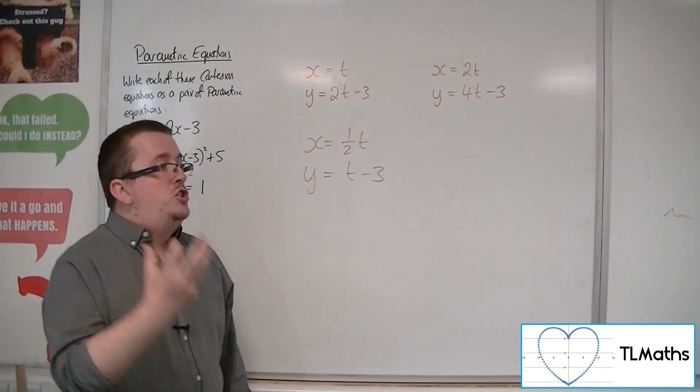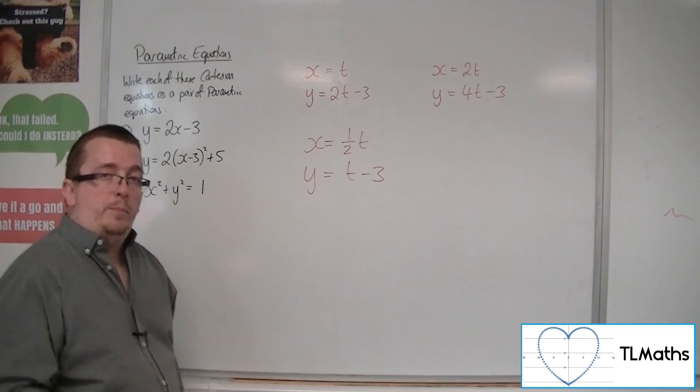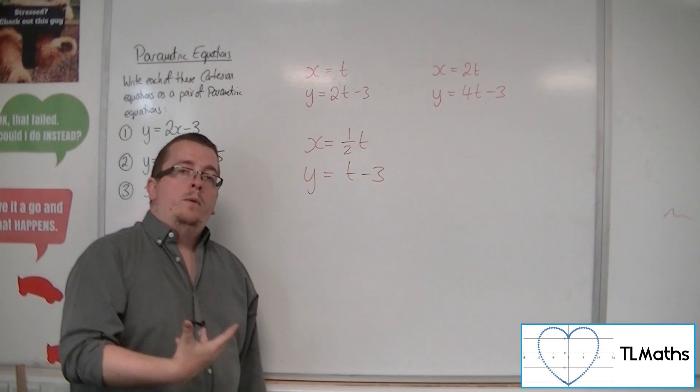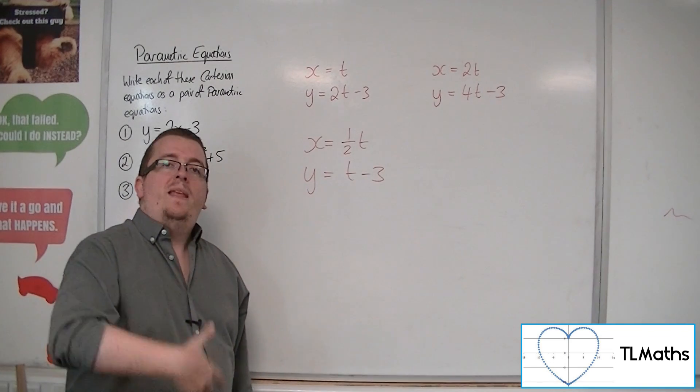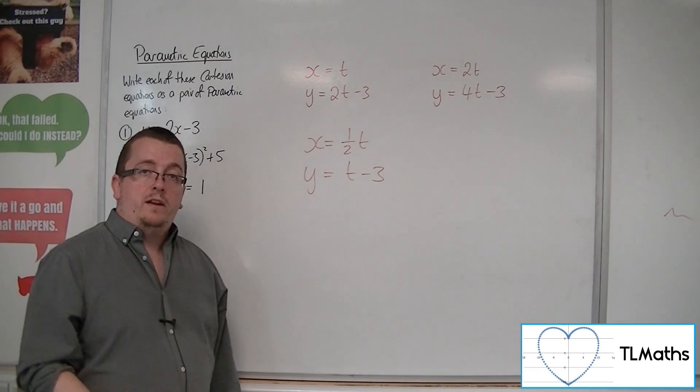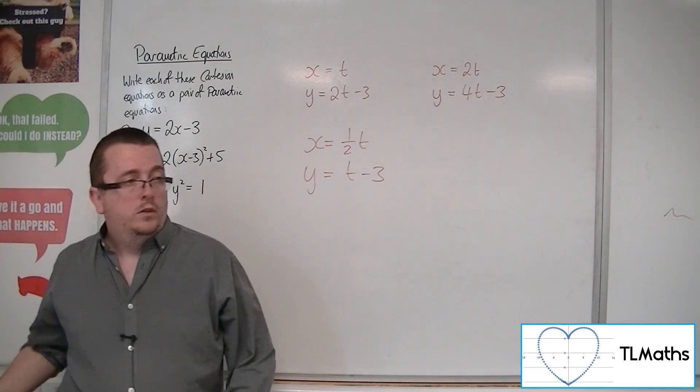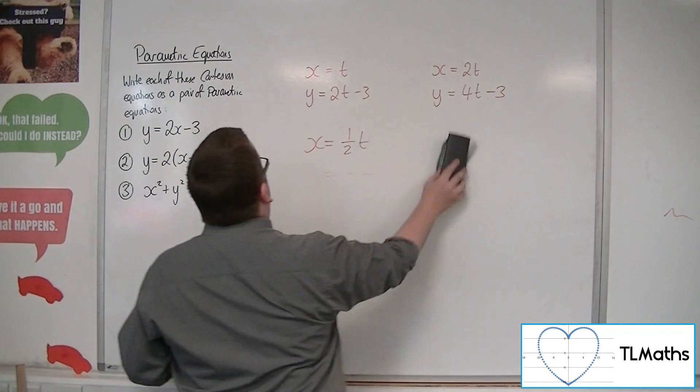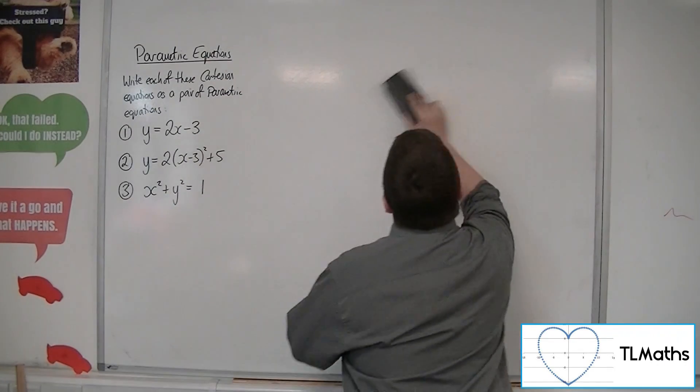So they do each have different properties in the sense of how they're governed by their parameter. However, they would trace out precisely the same straight line. So that's the first one.